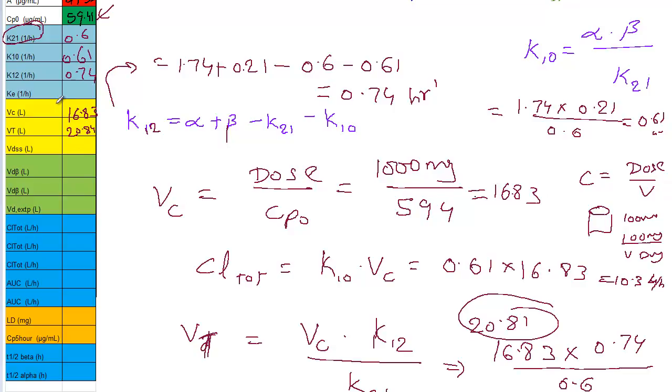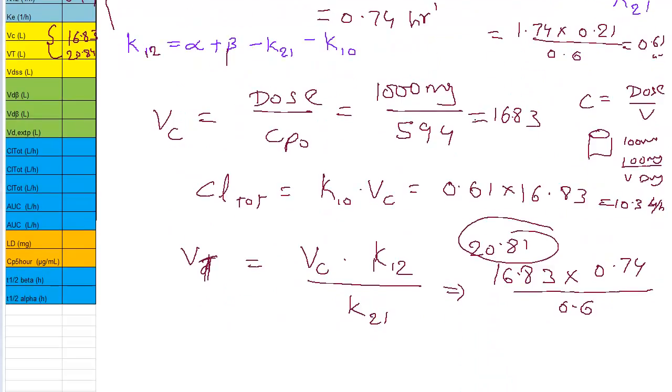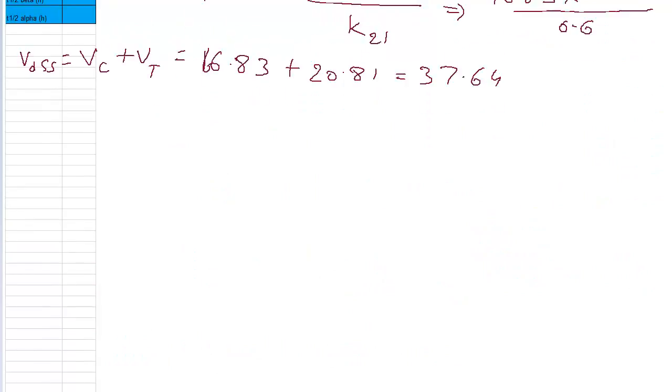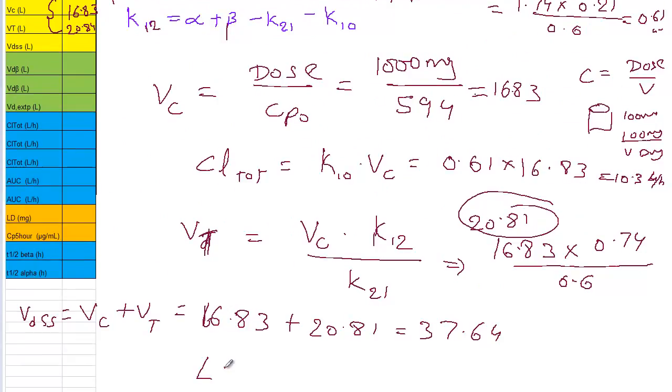So Vt is 20.81. Vt is nothing but a total of Vc plus Vt. VdSS is equal to Vc plus Vt. 16.83 plus 20.81 is equal to 37.64. Now that we got a VdSS, what is the next step? Next in the final step, I should say, almost final.